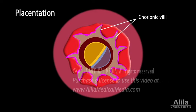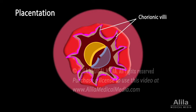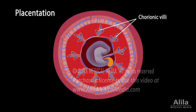In week 3, extraembryonic mesoderm cells fill the villi and differentiate into fetal blood vessels, including the three umbilical vessels that connect the embryo to the placenta. The now secondary villi are submerged in pools of maternal blood.